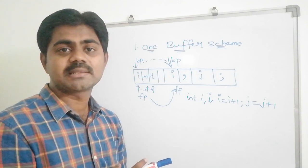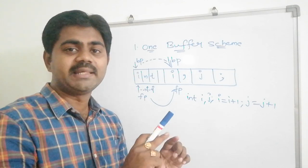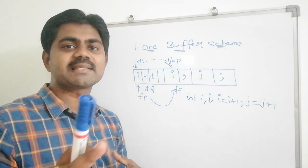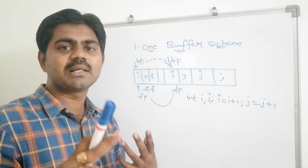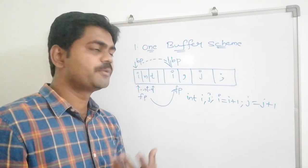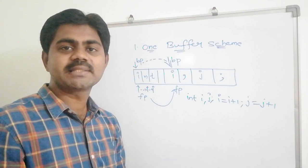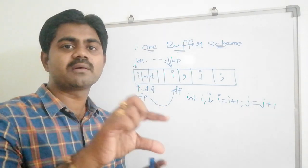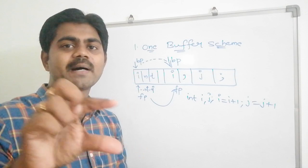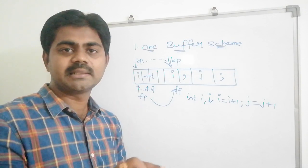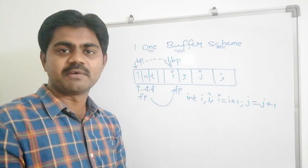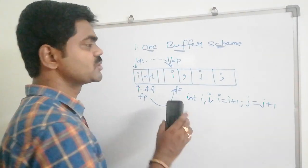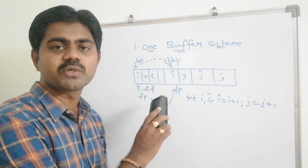To overcome this, I will take a two buffer scheme — I have two storage capacities. If my input string is very long, I will store some part of it in one buffer and the remaining part in another buffer. Let's see how it looks.